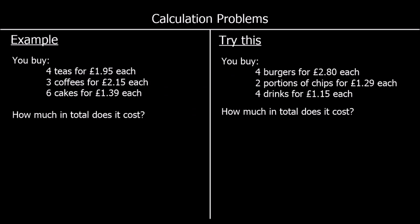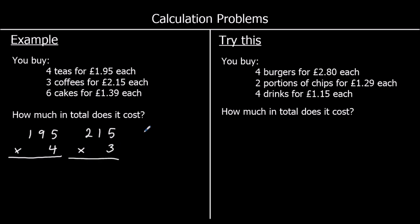Calculation problems. These are problems involving money. We've got an example that says you buy four teas for £1.95 each — that's 195p four times — three coffees for £2.15 each, so 215p three times, and six cakes for £1.39 each, so six times 139p. We work out what each of these are, and then we're going to add the answers together.